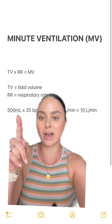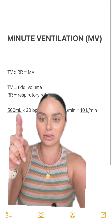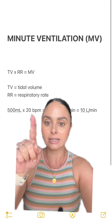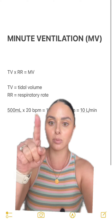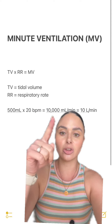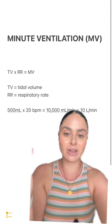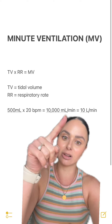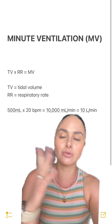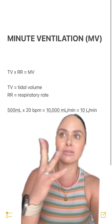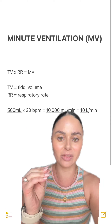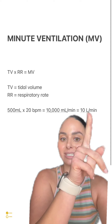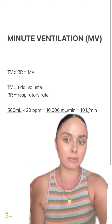Let's say your patient is breathing 500 milliliters per breath times 20 breaths per minute. You're going to have a minute ventilation of about 10,000 milliliters per minute. We don't usually write it in milliliters, so we'll convert it to liters, which is about 10 liters per minute.